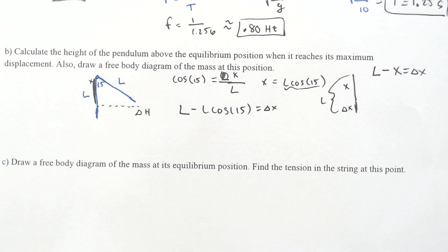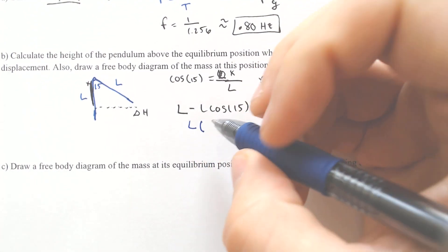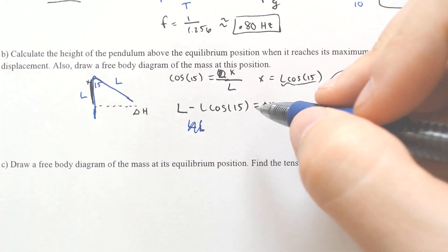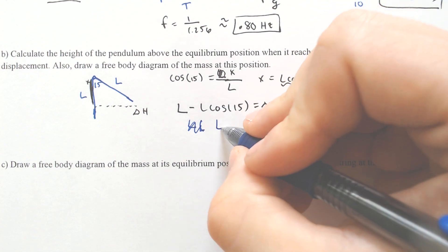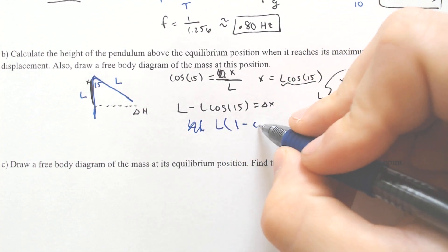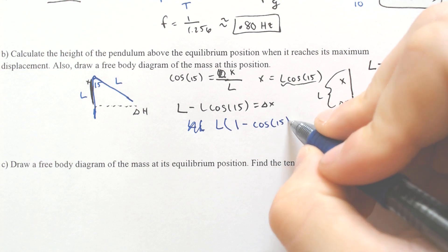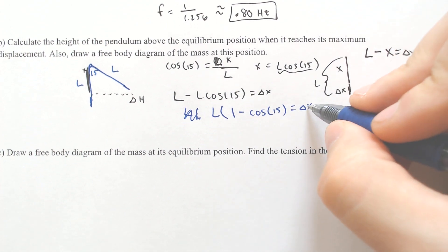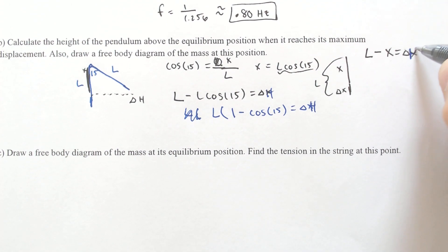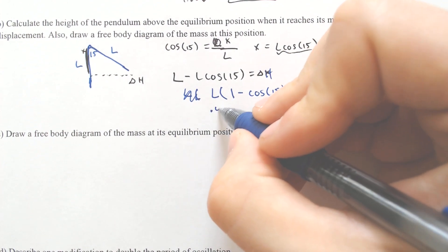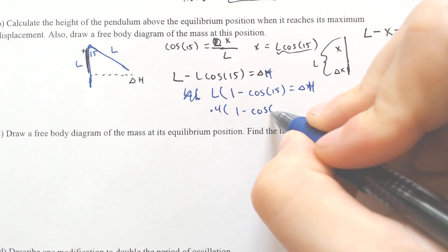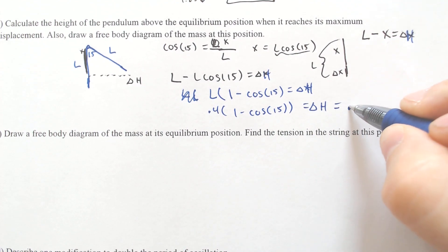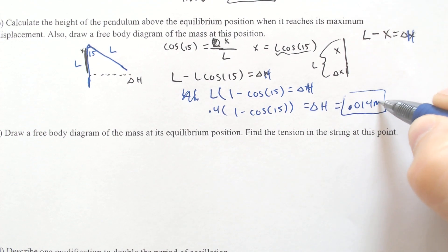We've done this a few times on the channel, so I'm going through it quickly. Plugging in, we get 0.4 times (1 minus cosine of 15) equals the change in height, which is approximately 0.014 meters according to my calculations.